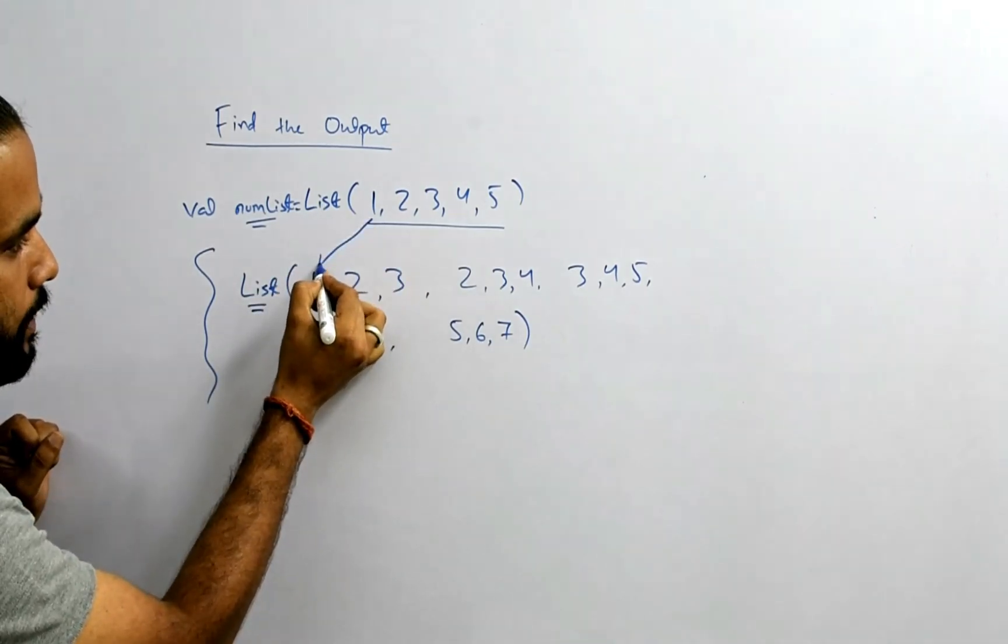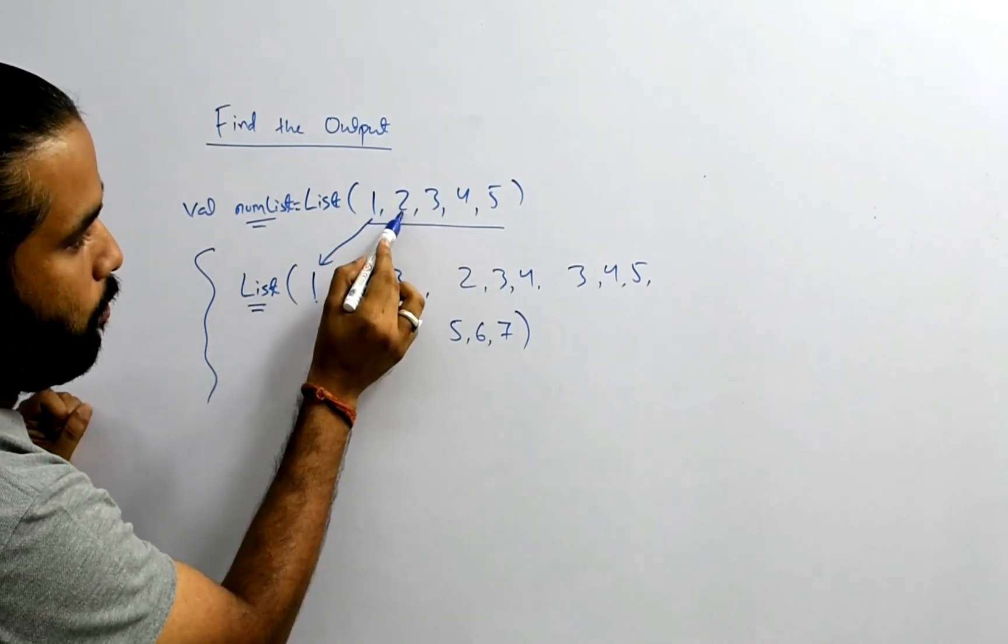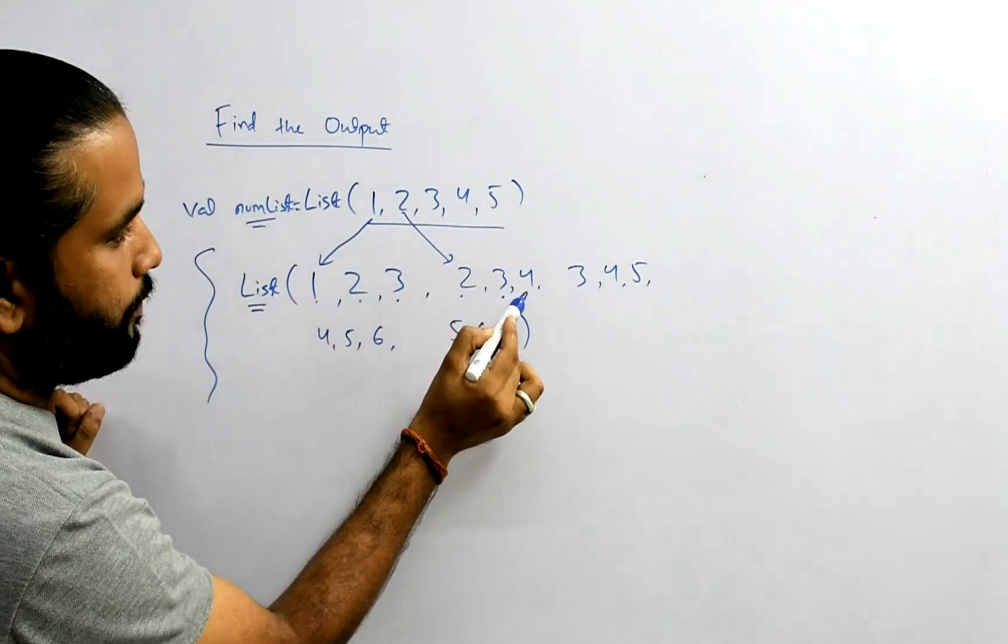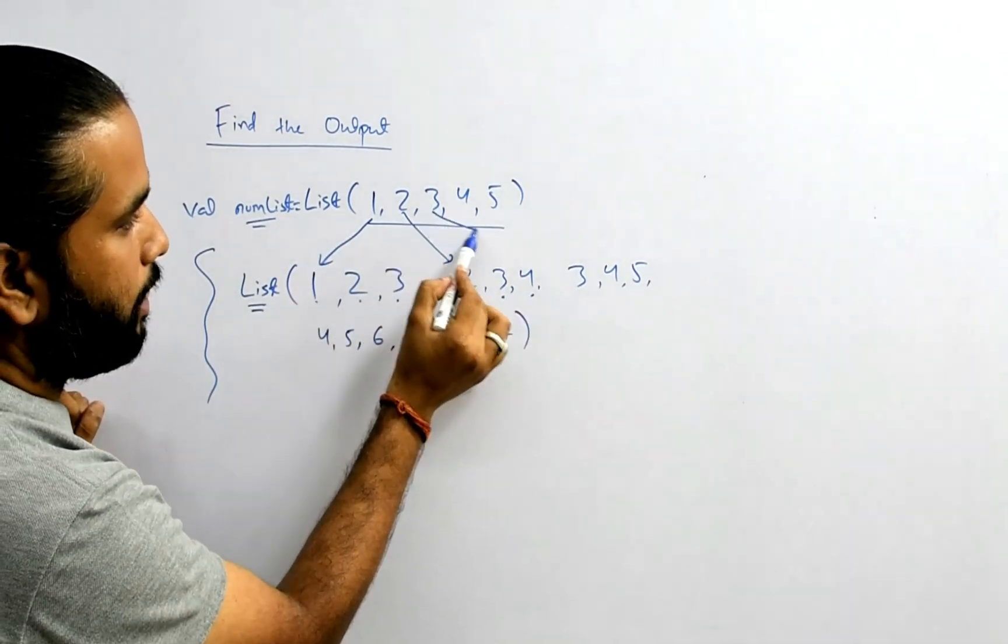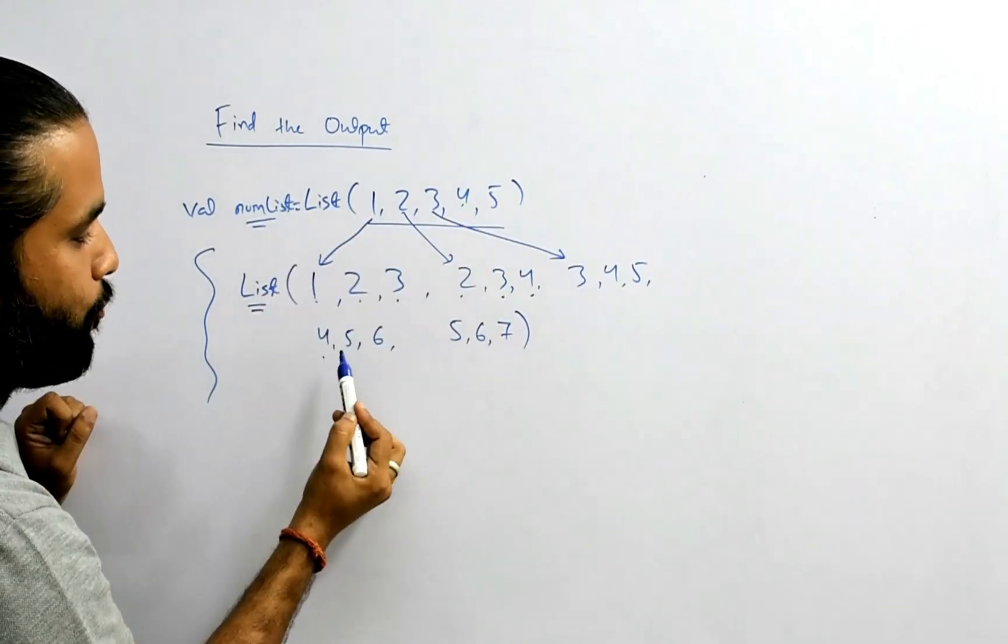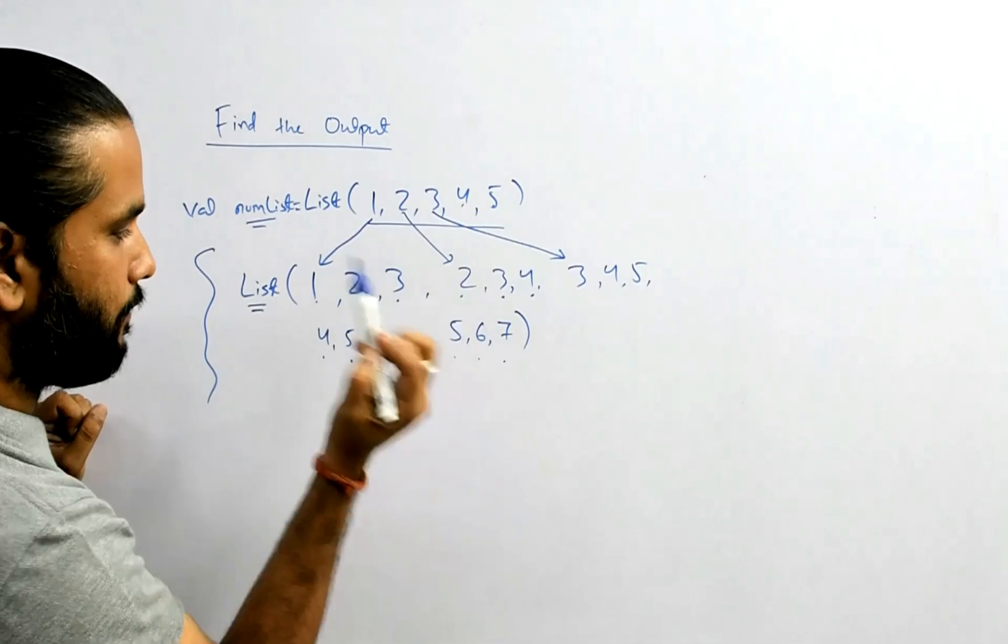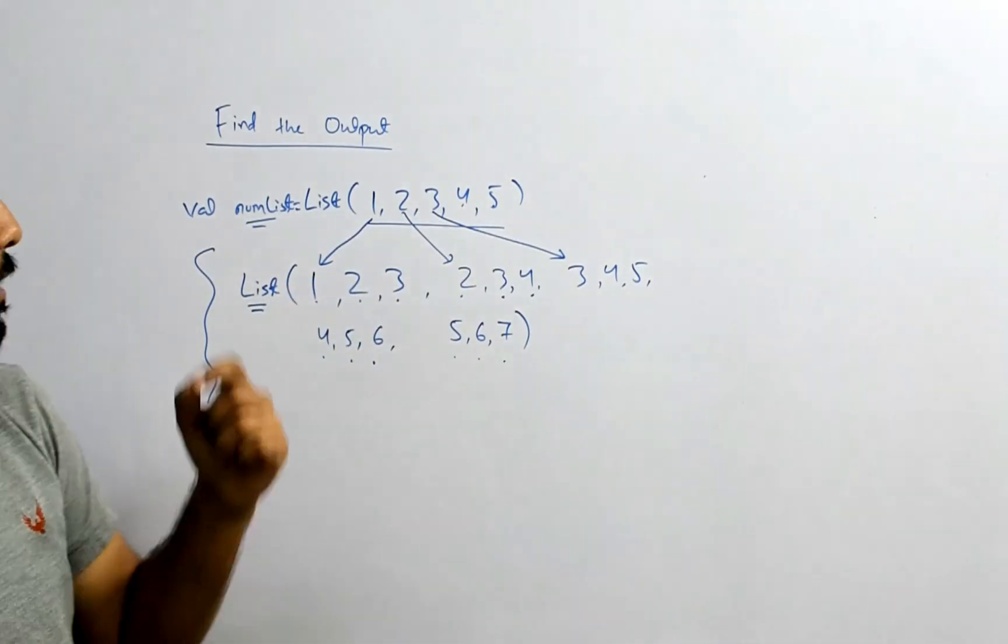For this 1, what I got is 1, 2, and 3. For this 2, what I got is 2, 3, 4. For this 3, what I got is 3, 4, 5. For this 4, what I got is 4, 5, 6. For this 5, what I got is 5, 6, 7.